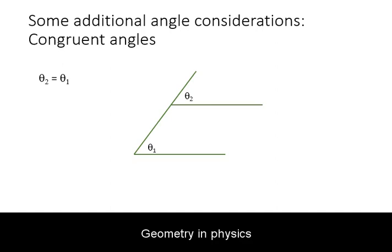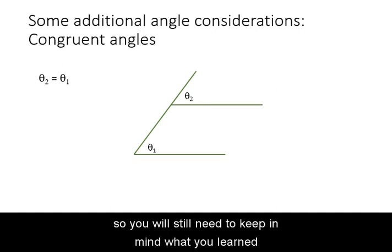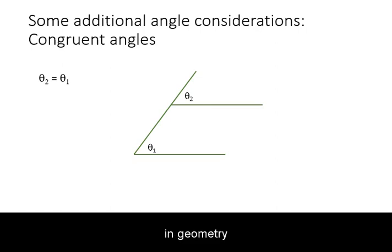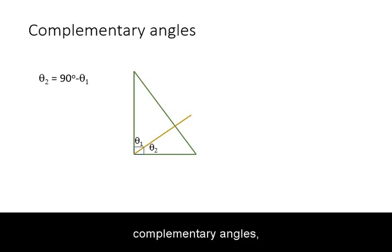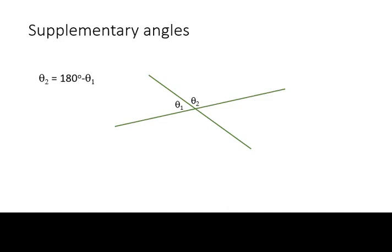Geometry in physics is not limited to right triangles, so you will still need to keep in mind what you learn in geometry about congruent angles, which is defined as angles that are the same, complementary angles, which are defined as angles that add up to 90 degrees, and supplementary angles, angles that add up to 180 degrees.